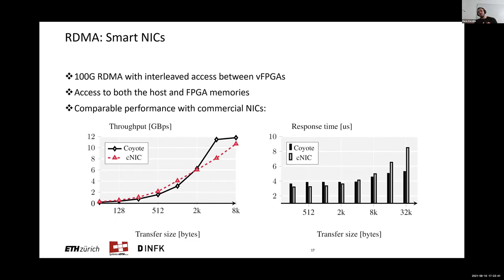We find that RDMA is an interesting match with Coyote because of the virtualization layer — you can easily keep track of all queue pairs and connection details. In Coyote, we can access both host memory directly from RDMA, but also go directly to FPGA memory. This opens up room for disaggregated memory research because we can essentially get rid of the PCIe latency and cut PCIe out from the equation completely. We can even replace the CPU with a lower power ARM core or a soft core CPU just for control. The pure microbenchmark of the RDMA stack using a Mellanox 100G NIC shows quite comparable performance, which is nice to see.